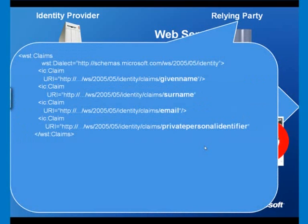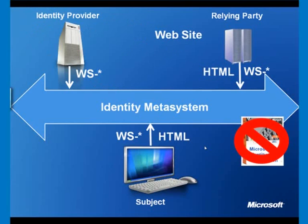The relying party will need to express its policy — what claims it needs, what token format it needs, and what identity provider it's prepared to accept tokens from — in the form of a policy statement. Here we have a WS-Policy which specifies that this relying party wants a given name, a surname, an email, and a claim called a private personal identifier. If the relying party happens to be a website, we can't use web services protocols, so we have to use HTML.